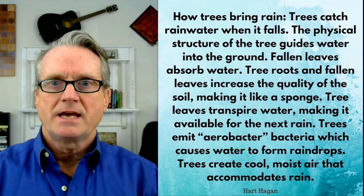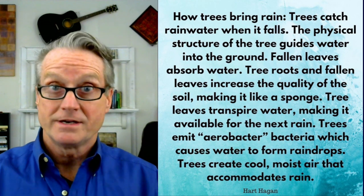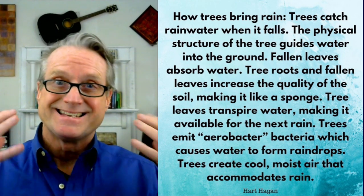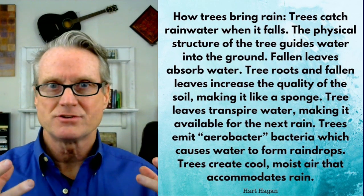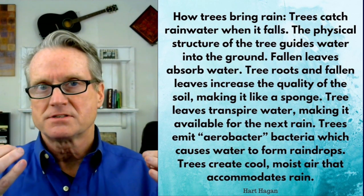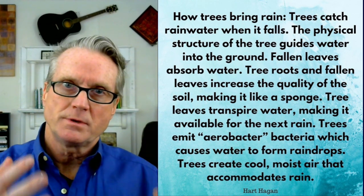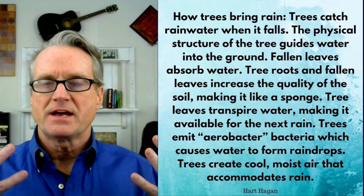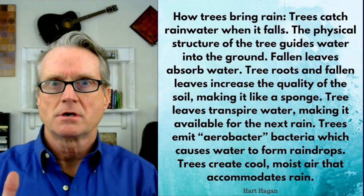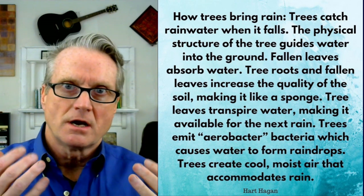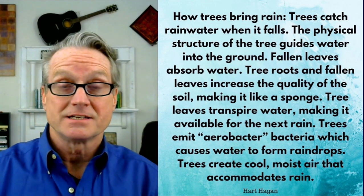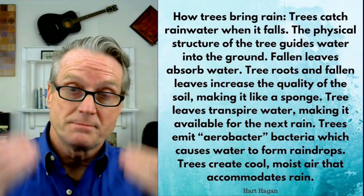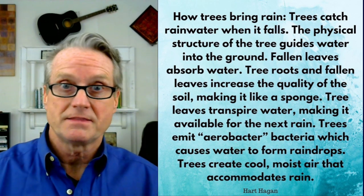Trees catch rainwater when it falls. The physical structure of a tree stands in the way of that raindrop. The leaves and the twigs and the branches and the trunk provide the physical structure on which rainfall clings. They take away the power of the water as it's coming down.